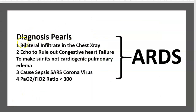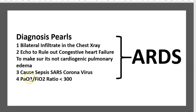Diagnostic criteria — there are four. The first is bilateral infiltrates on the chest X-ray. The second is echo to rule out congestive heart failure, to make sure it is not cardiogenic pulmonary oedema. The third is the cause: sepsis, SARS, or coronavirus. The fourth is PaO2 over FiO2 ratio less than 300.